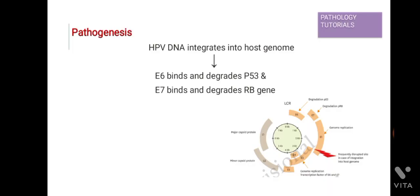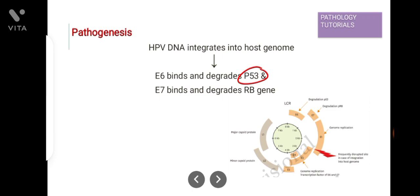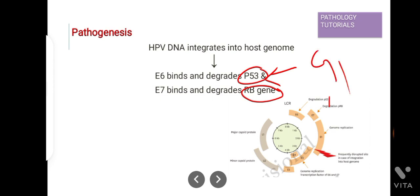HPV DNA integrates into the host genome, and its various proteins like E6 bind and degrade p53, while E7 binds and degrades the retinoblastoma gene product. Cell growth is regulated by these two cellular proteins: p53 and retinoblastoma gene product. The HPV E6 protein binds to p53 and targets it for rapid degradation via the cellular ubiquitin ligase pathway. As a result, the normal activities of p53, which govern G1 arrest, apoptosis, and DNA repair, are all abrogated.